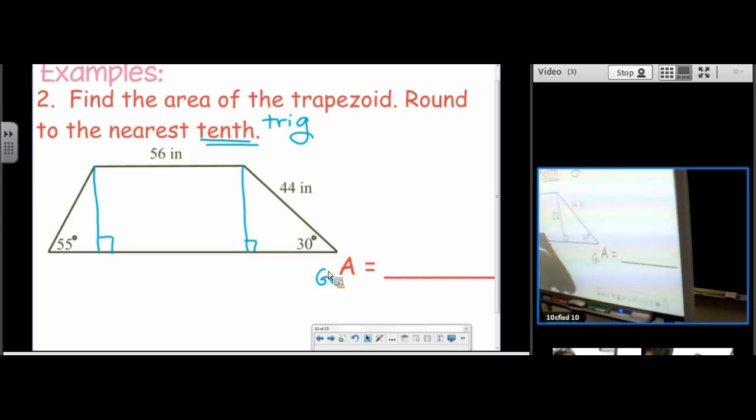So this would be, what, half of 44. And this would be 22 root 3. This is going to be 56. And over here, we're going to have to do trig. So to find this length right here, we have adjacent and, nope, we have tan. We have opposite and adjacent.